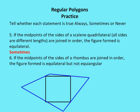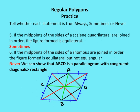Number six: if the midpoints of the sides of a rhombus are joined in order, the figure formed is equilateral but not equiangular. The answer is never. We can show that the resulting figure ABCD is a parallelogram with congruent diagonals, making it a rectangle. So joining the midpoints of a rhombus produces a rectangle, which is equiangular but not necessarily equilateral.